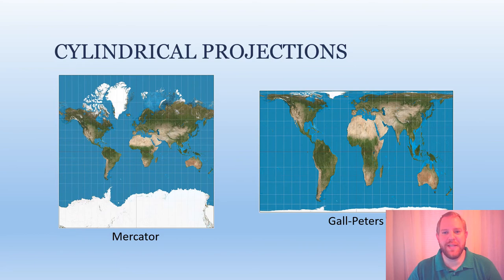Here are a couple examples of cylindrical projections. Most of you are probably familiar with the Mercator projection, as it is commonly used in schools in the US. This map was created for sailors, so the straight lines are correct, but there is considerable size distortion near the poles.